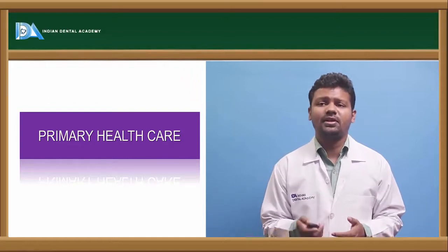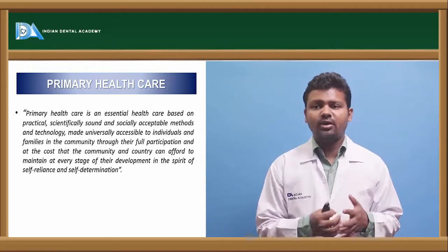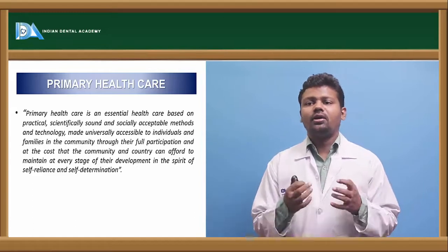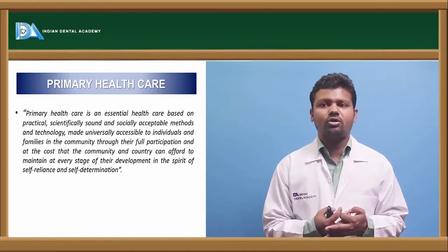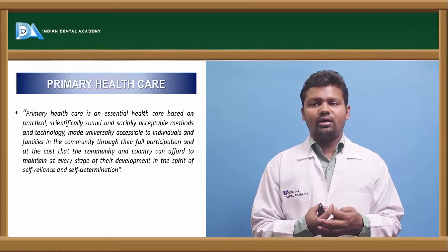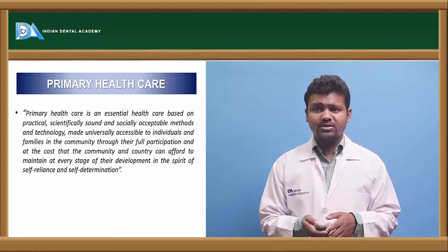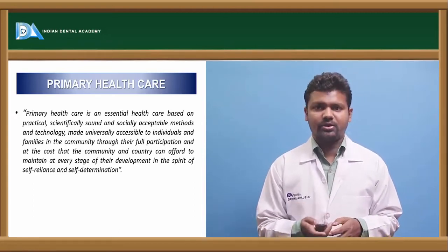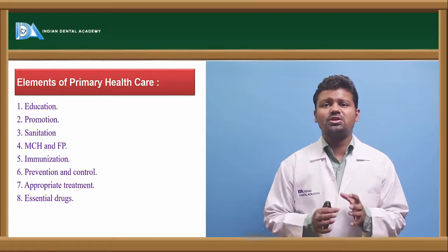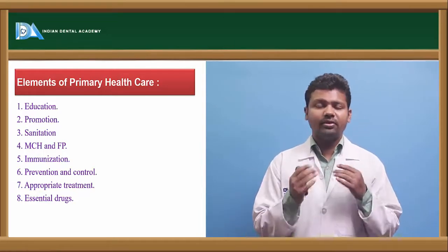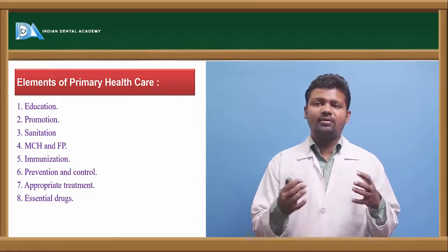Coming to primary healthcare, it is defined as essential healthcare based on practical, scientifically sound and socially acceptable methods and technology. Made universally accessible to individuals and families in the community through their full participation, at the cost the community and country can afford, to maintain at every stage of their development in the spirit of self-reliance and self-determination. This is the definition — it can be asked in your Viva or come as a short note. The first element is education: education of the individual for maintaining personal hygiene and regarding available health services.